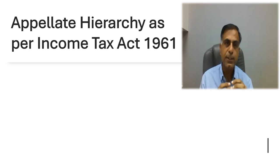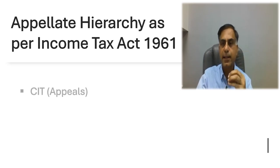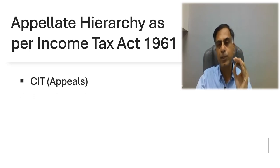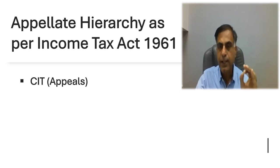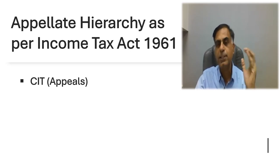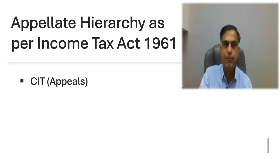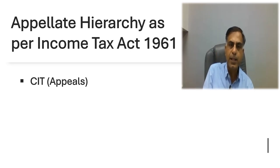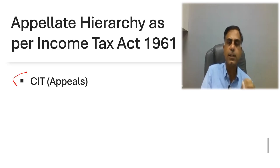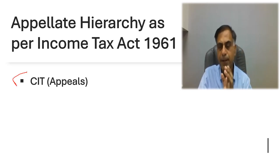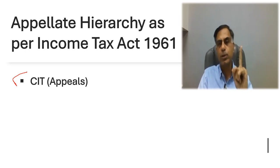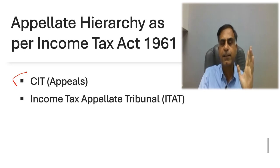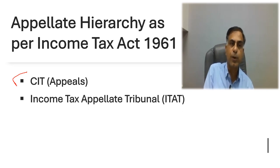I would like to begin with this hierarchy. The first appeal which may be filed by an Assessee against an order of the Assessing Officer — wherever such order relates to an assessment order, a penalty order, or a rectification order — the appeal can be filed directly before CIT Appeals. You should know that the first authority before whom an appeal can be filed would be CIT Appeal.